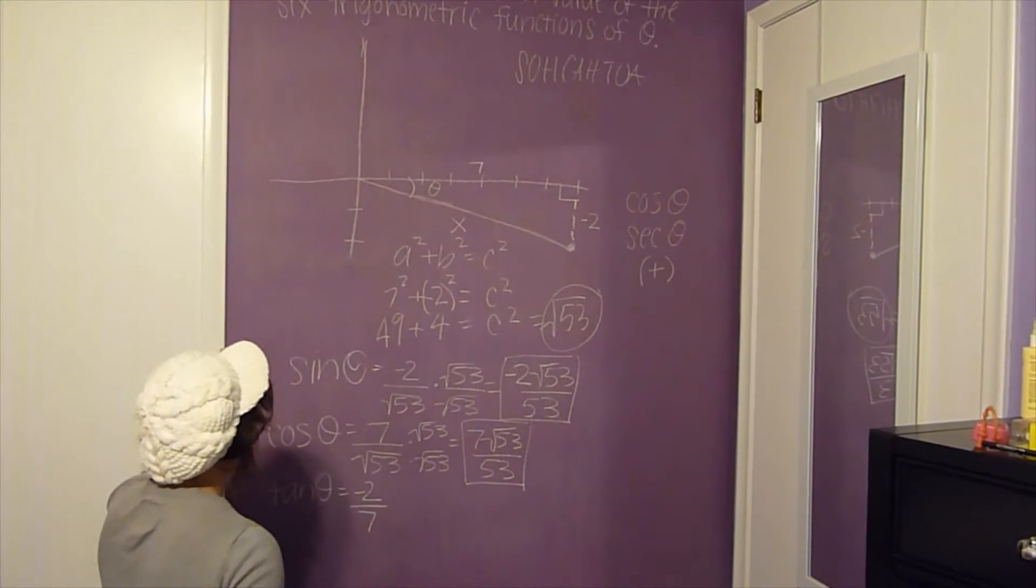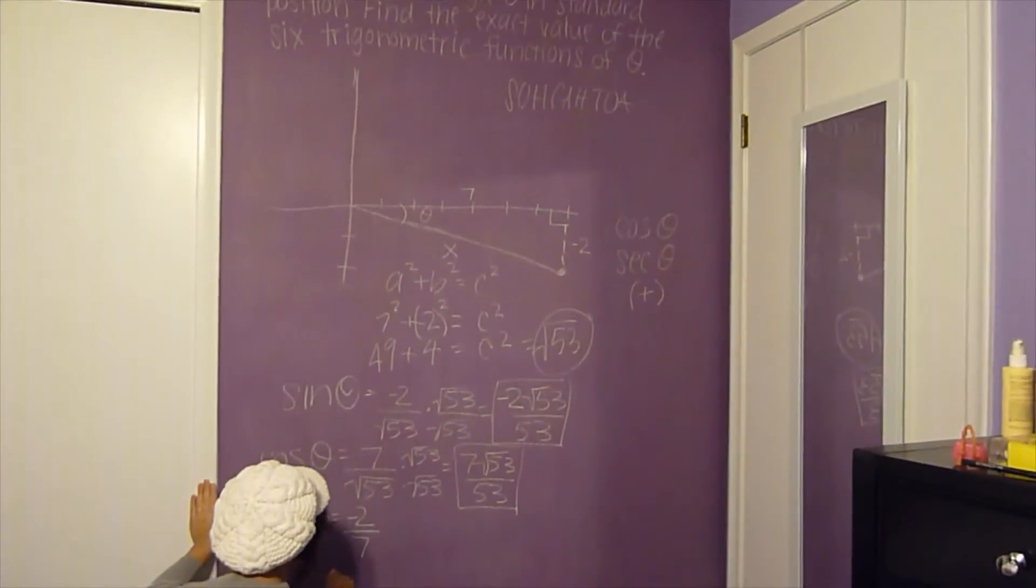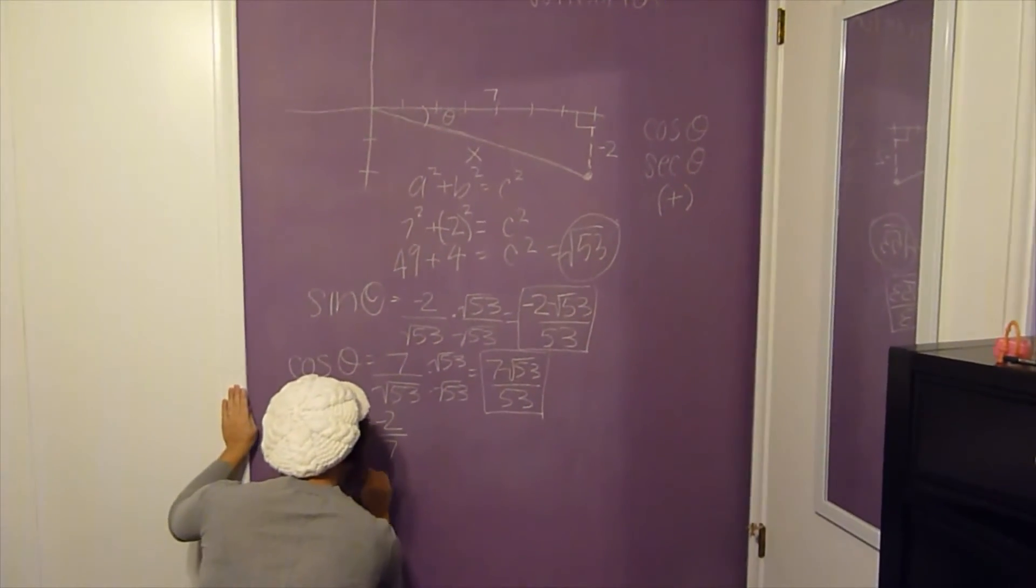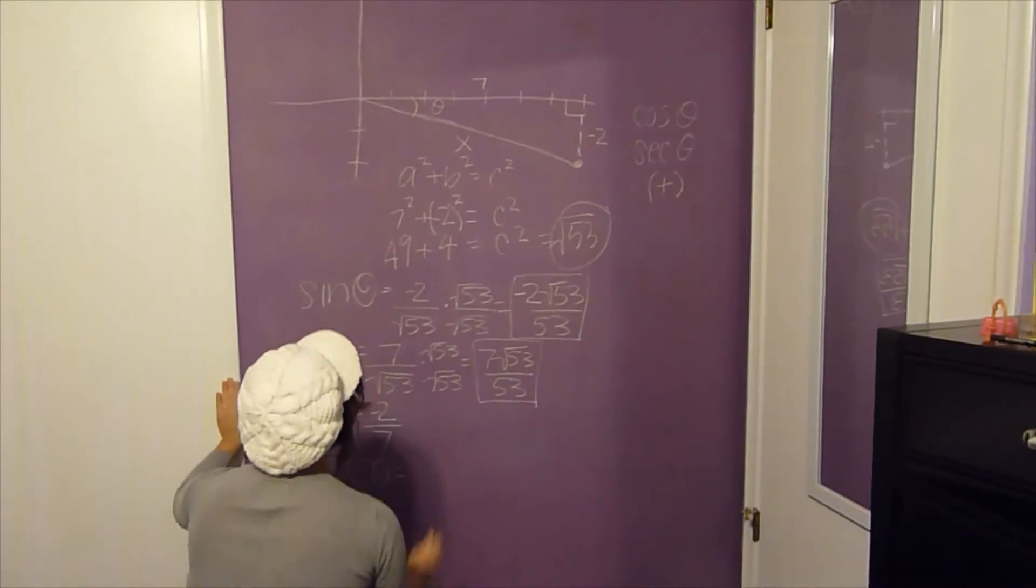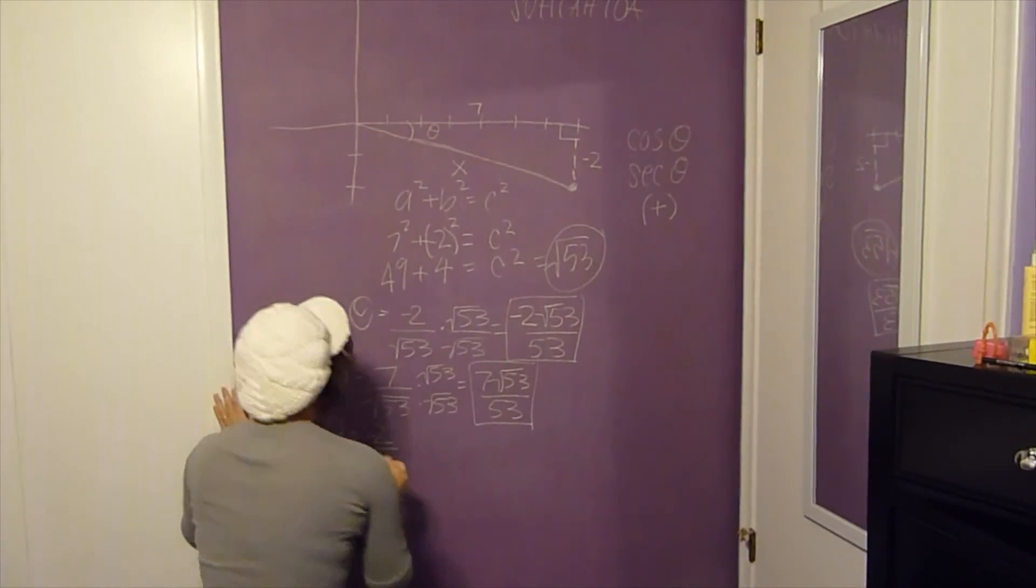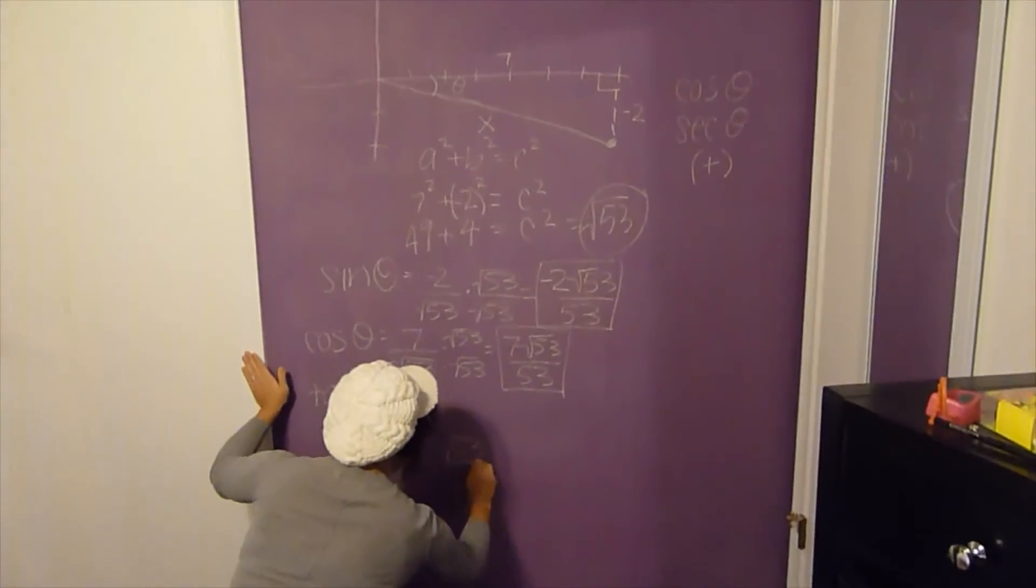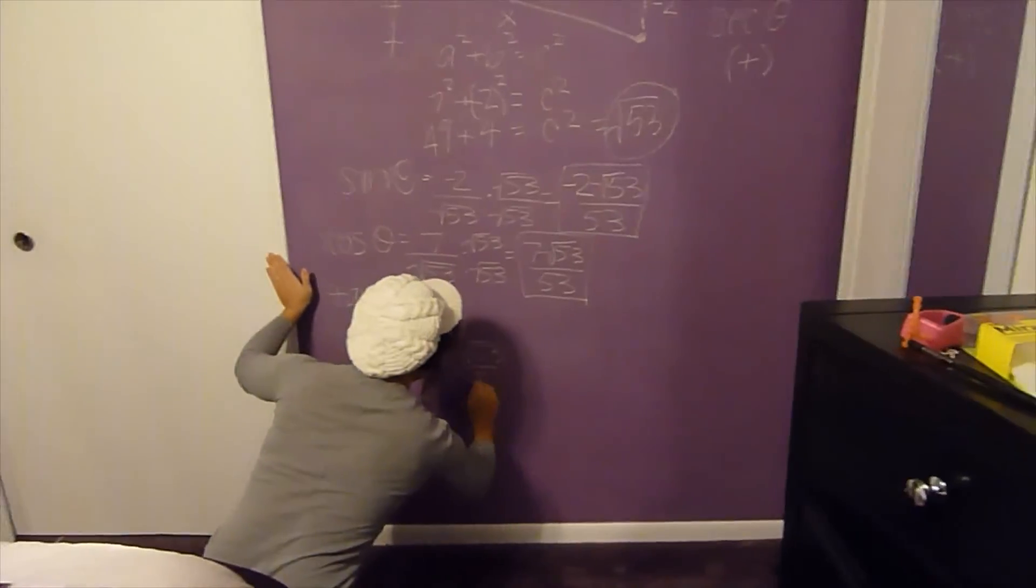And then you're going to have your cosecant of theta. It'll just be the flip of your sine. So it'll be √53 over -2.